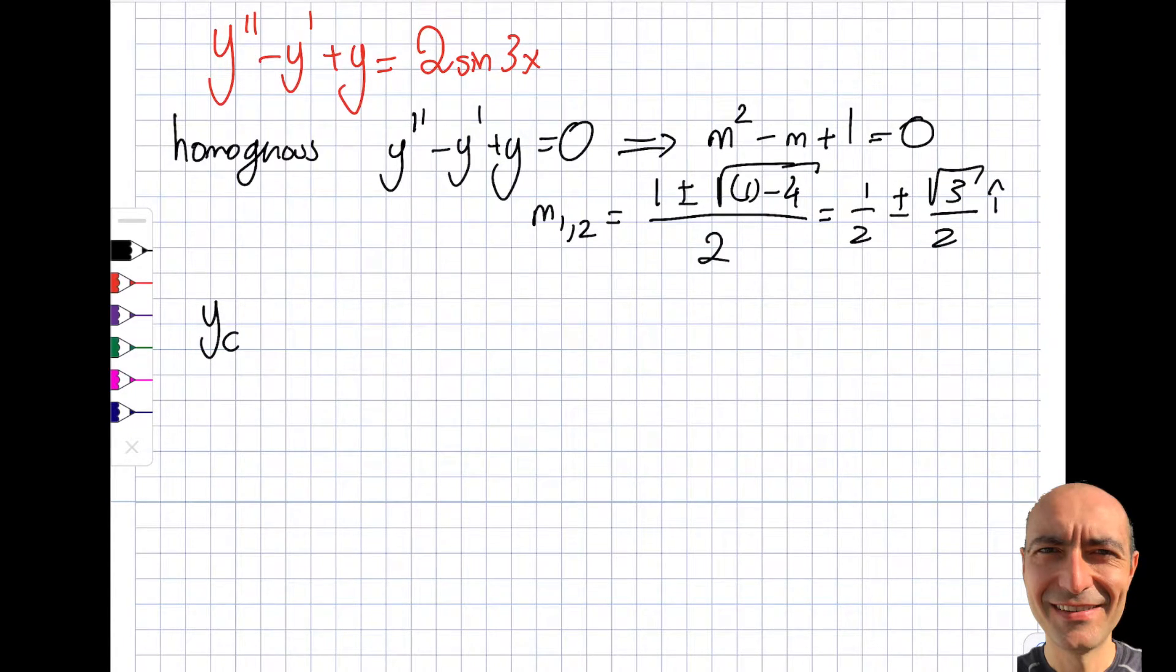So let's look at the complementary solution then. Remembering that this is alpha from the previous modules, this is beta. So I'm going to have e to the power of x by 2. Then I'm going to multiply by c1 times sine square root of 2 by 2x plus c2 cosine square root of 3 by 2x. Nice and easy.